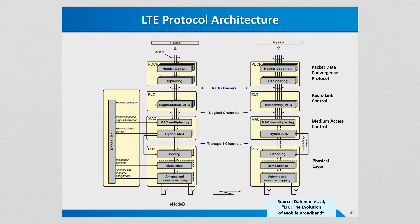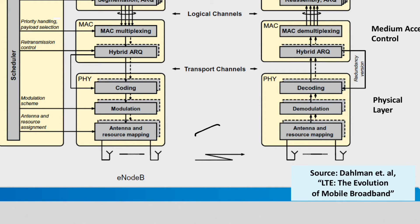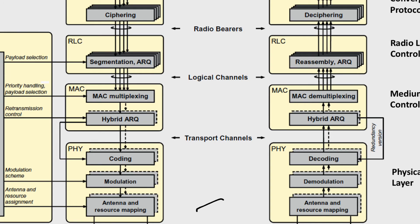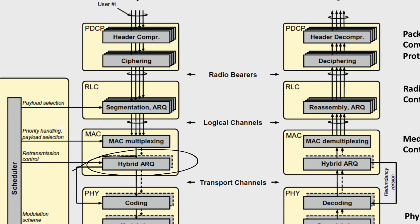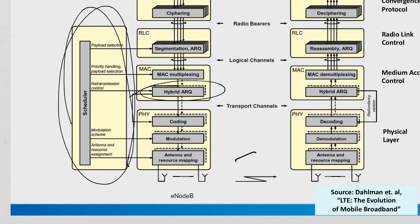Here's another look at the protocol architecture, with the E-Node-B on the left and the UE on the right. At the physical layer, you have coding — error control coding and modulation — and antenna resource mapping, with complementary procedures on both sides of the channel. At the MAC level, there is multiplexing and demultiplexing, and hybrid ARQ is handled here. One layer above is radio link control, where a higher-layer ARQ protocol is used. On the E-Node-B side, there's a scheduler that determines what frequencies are used at any given time.